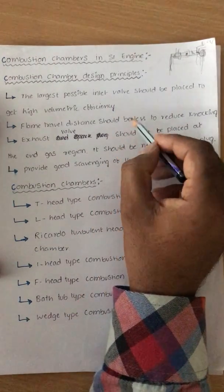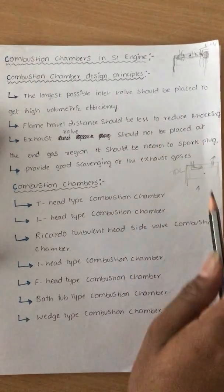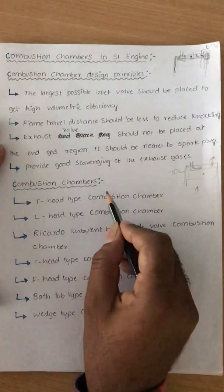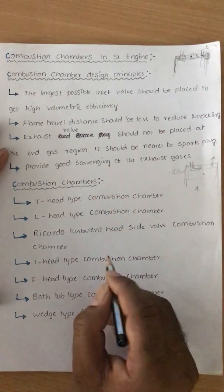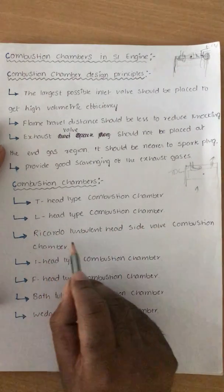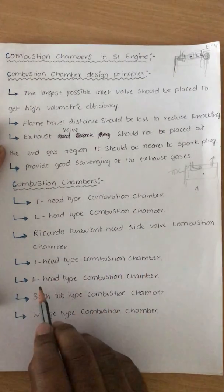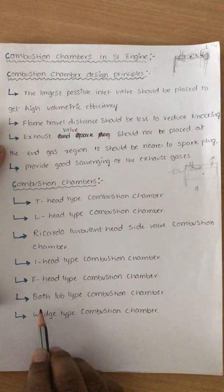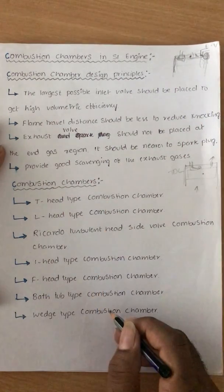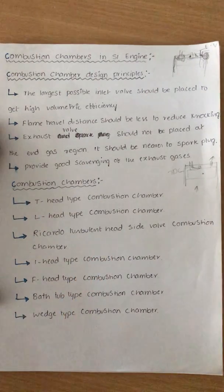These are the four very important parameters we need to take care of while designing the combustion chamber of an SI engine. There are different types of combustion chambers: T-head, L-head, Ricardo turbulent head side valve, I-head, F-head, bath type, and wedge type combustion chambers. We will discuss these in detail one by one in the next class. Thank you very much.